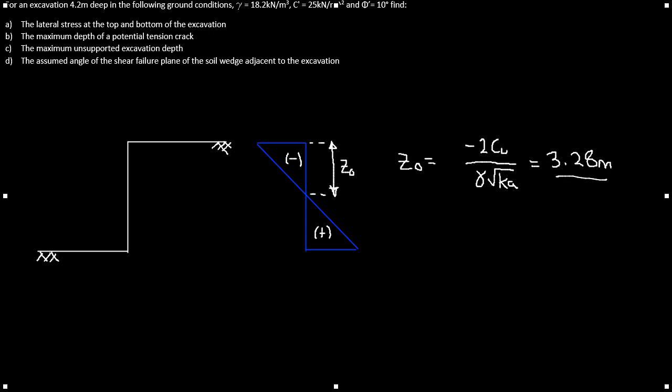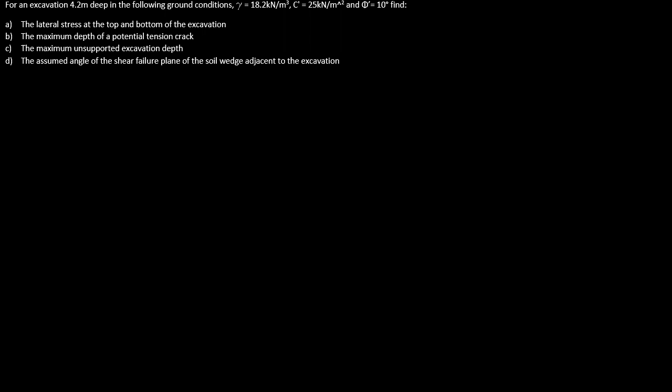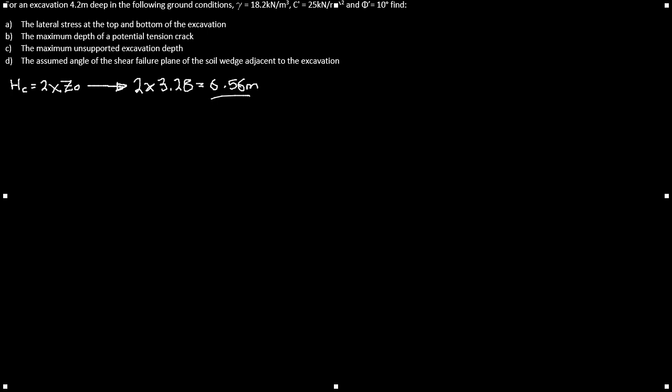Part C asks us to find the maximum unsupported excavation depth. HC can be simply calculated as 2 times z₀, so 2 times 3.28 equals 6.56 meters. Alternatively, HC equals 4 times cohesion divided by gamma times the square root of kA.